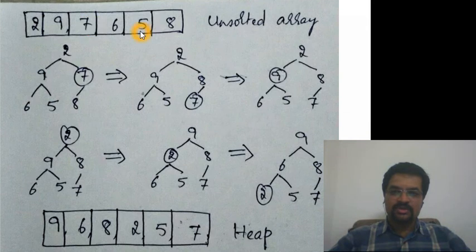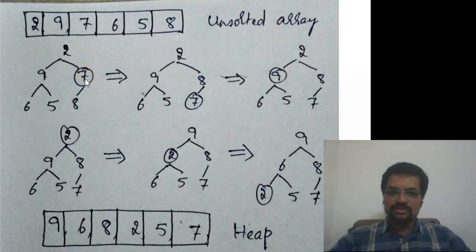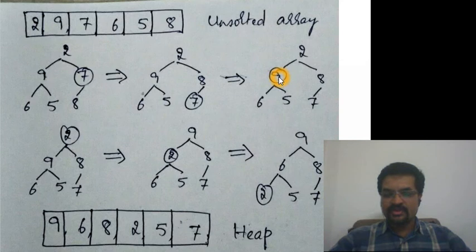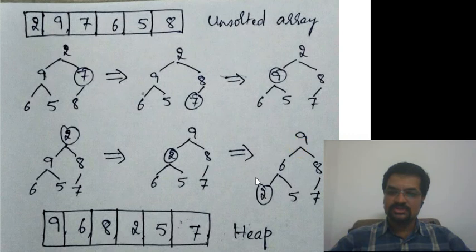Let's see an example. We have an unsorted array and its binary tree representation. Applying the bottom-up heap construction algorithm, we start with the last non-leaf node and try to push it down. Since it's not satisfying the heap property, we push it down and pull up the eight. The next node to process is nine, which already satisfies the heap property. For node two, we pull the nine up and two goes down, but it still doesn't satisfy the property, so six is pulled up and two goes down. Now the heap is constructed.